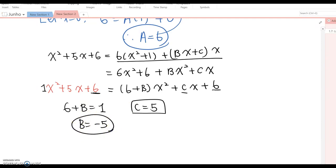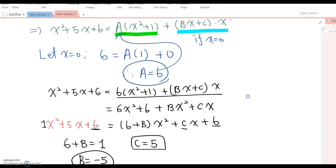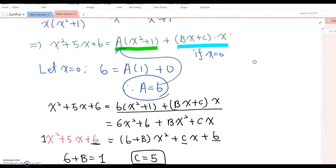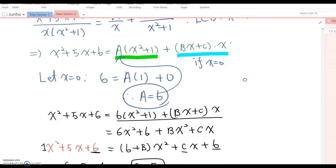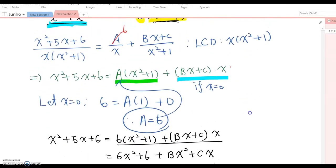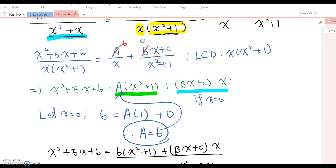So we found A equal to 6, B equal to negative 5, and C equal to 5. Therefore, we can rewrite that A equal to 6, and then B was negative 5, and C equal to 5.